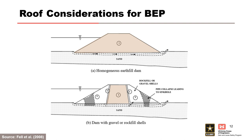In most cases, the core of the embankment is capable of providing a roof to a developing pipe in the foundation, because it is typically constructed of impervious soils or semi-impervious soils with sufficient fines. In the upper figure, a homogeneous embankment provides a roof to a developing pipe in the foundation. However, if there are upstream or downstream zones of non-plastic granular material in the embankment that are not capable of supporting a roof—for example, rock fill or gravel shells—then a pipe through the foundation may not be able to fully develop, as shown in the loose roof figure.